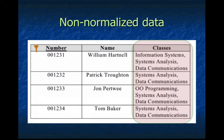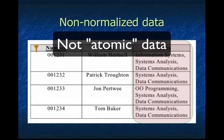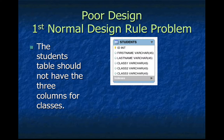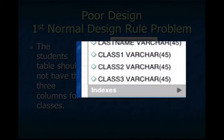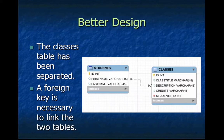Let's look at this example of non-normalized data. We have a class scheduling database, and each student is taking multiple classes. The designer of the database just created a field called classes with each class name separated by a comma. Bad design. Here's another solution: if you can't separate classes by commas, let's create three fields — class 1, class 2, and class 3. Not a good design either, because students could take more than one class. So here's a slightly better design.